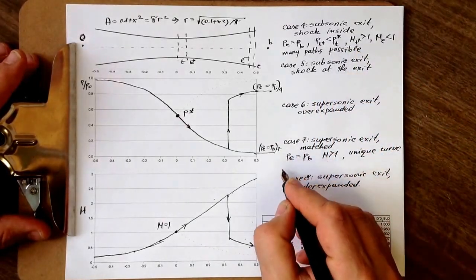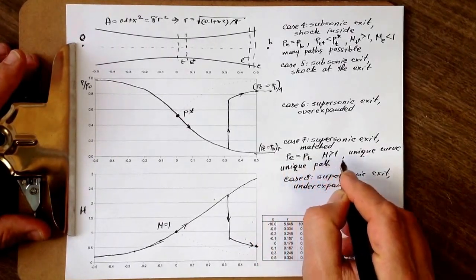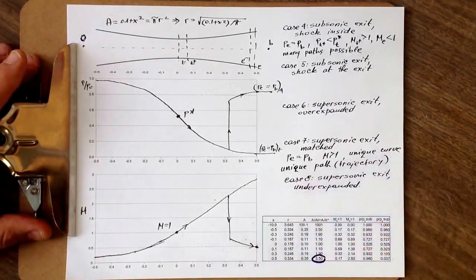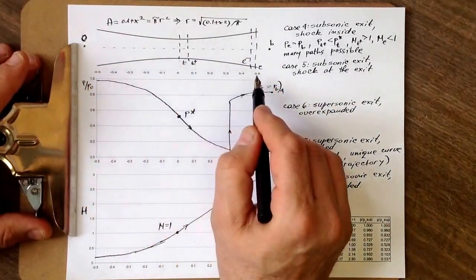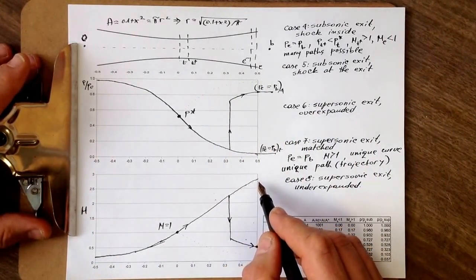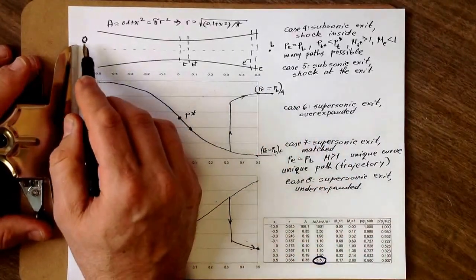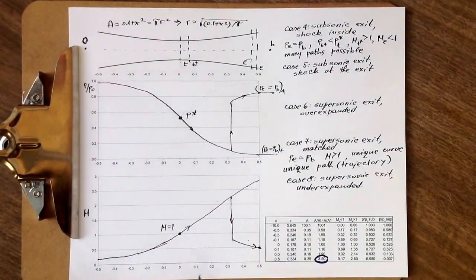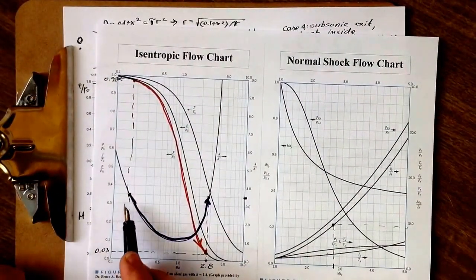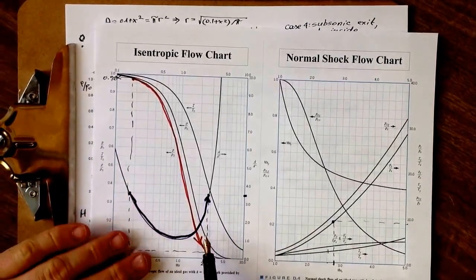In case 7, we can say here, unique path or trajectory. In other words, for a given nozzle geometry, there can be only a single path for Mach number along, and there is going to be single path for pressure ratio relative to the supersonic case.